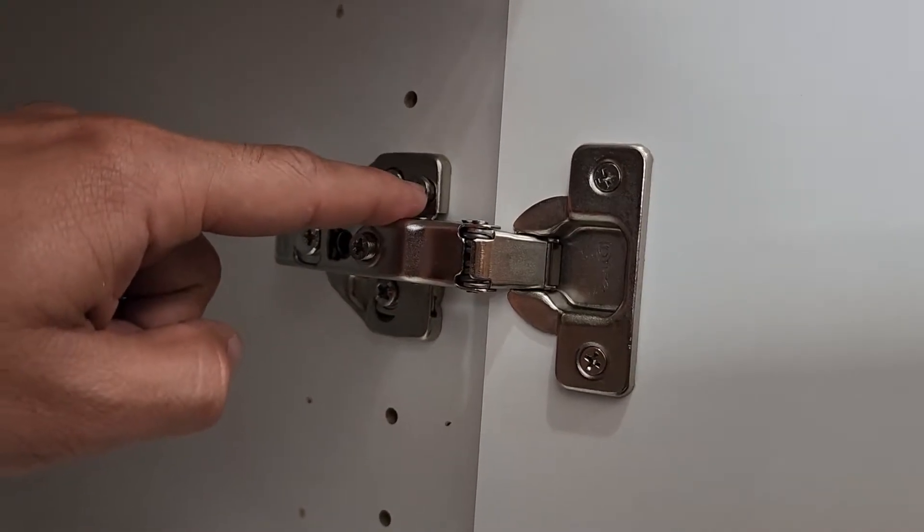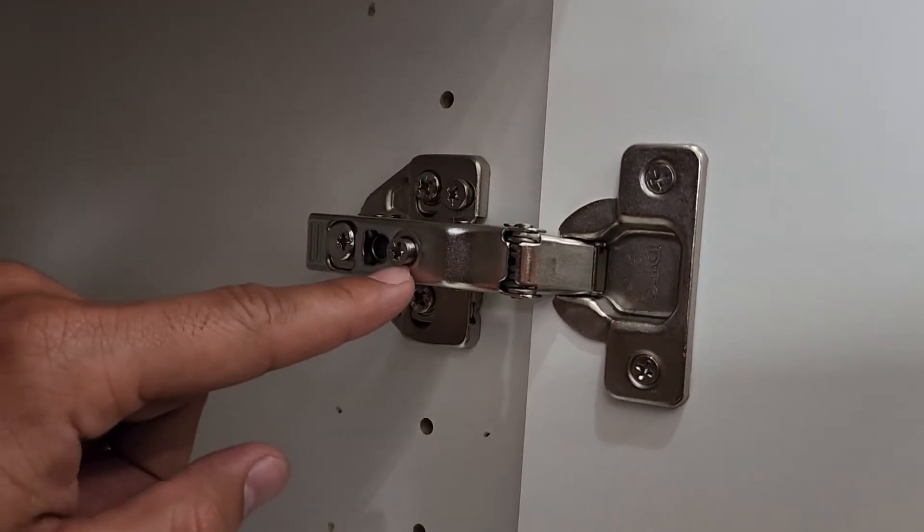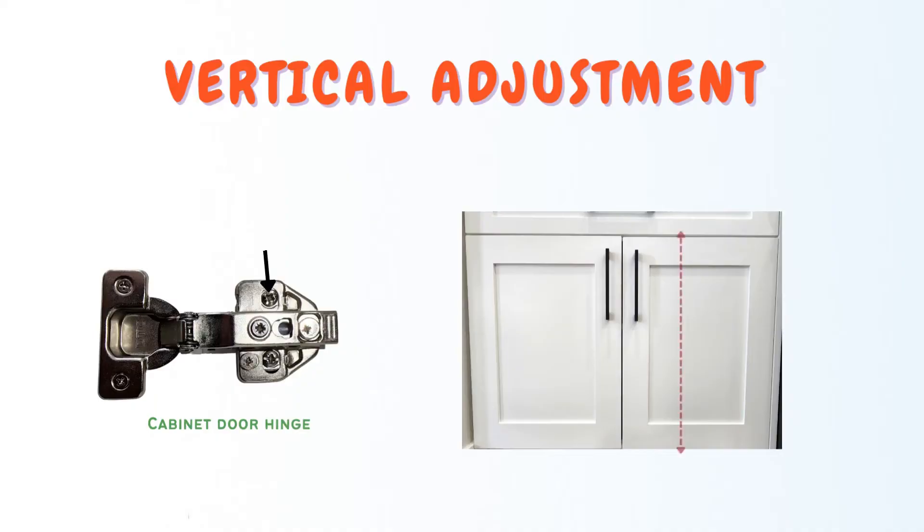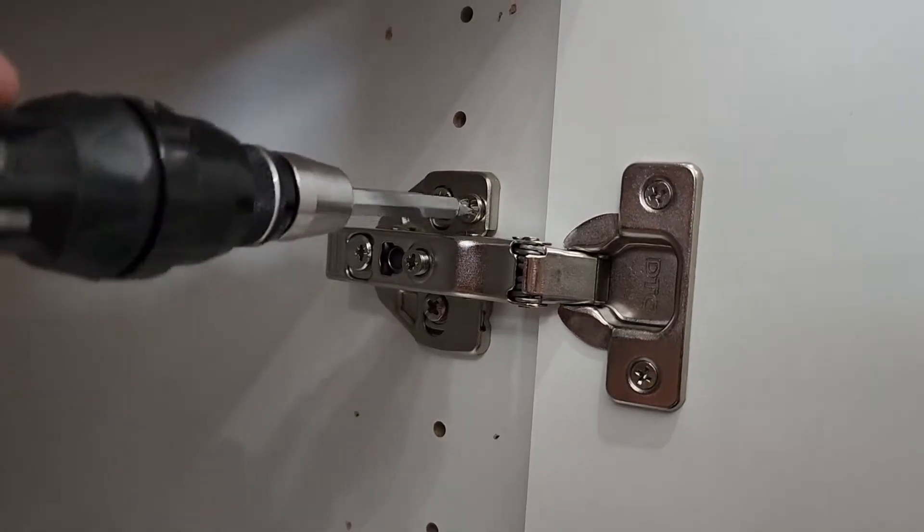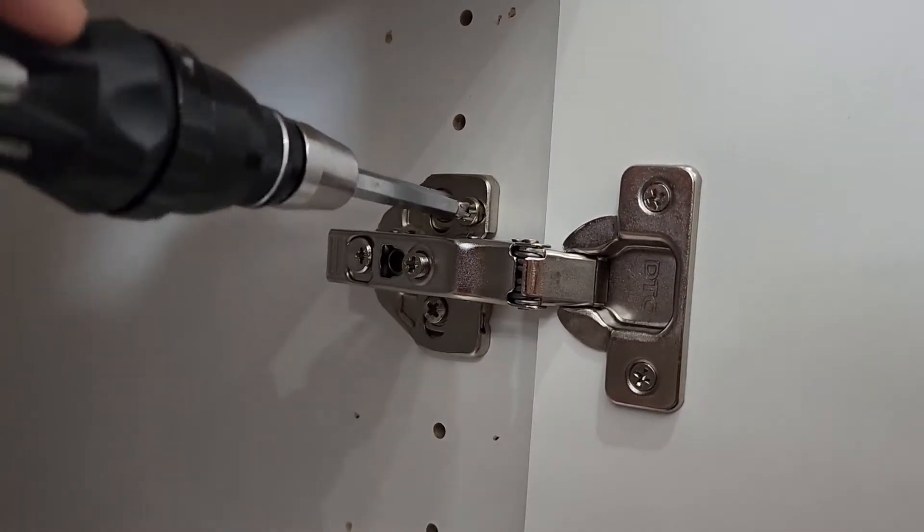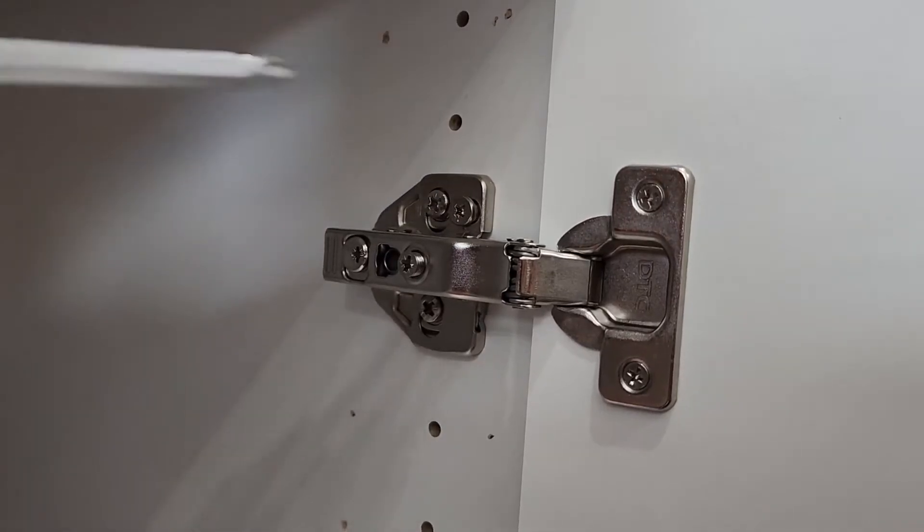Now there are three adjustment screws. One is on the top, then here in the front, and here in the back. The screw that's on the top - if you loosen or tighten it, it will move the door up and down, which is the vertical movement of the cabinet door.